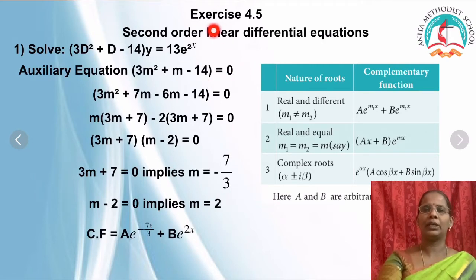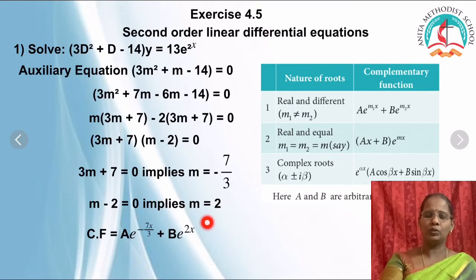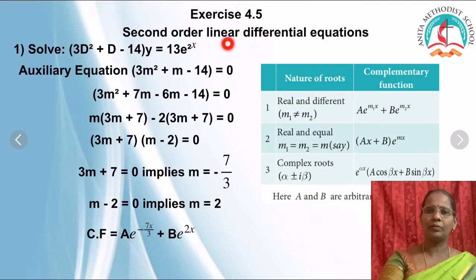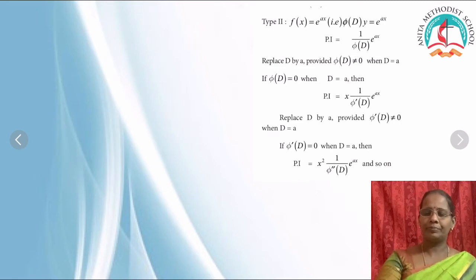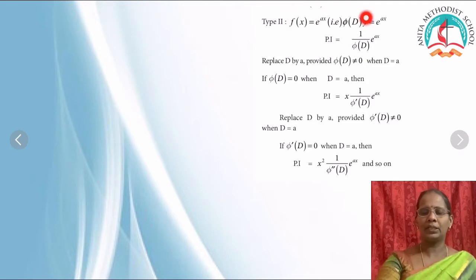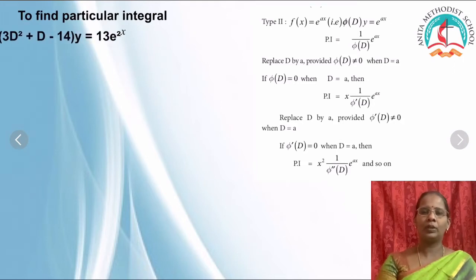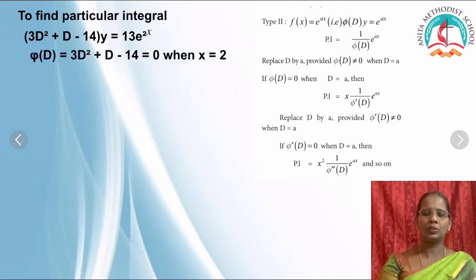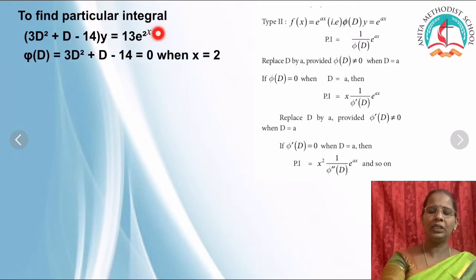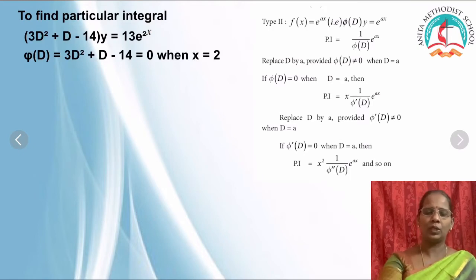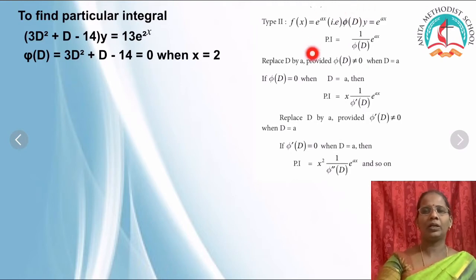The next step is to find the particular integral because we have a right-hand side. If there is no right-hand side (i.e., it is 0), then the complementary function itself is the solution. For the particular integral there are three rules. The given operator expression 3D² + D is named φ(D). Let me explain through an example: for the particular integral, take the coefficient of x in e^(ax) and substitute into φ(D).